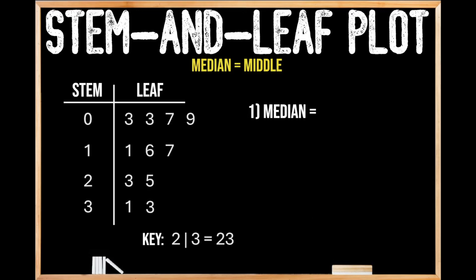So if that's the case, then that means that each one of these leaves represents an individual value. And luckily for us, we don't have to rearrange these values in order from least to greatest because stem-and-leaf plots are already written in ascending order.